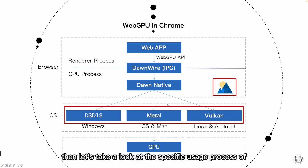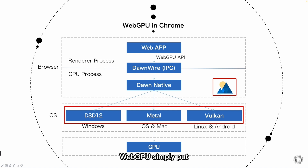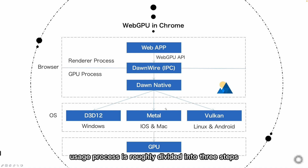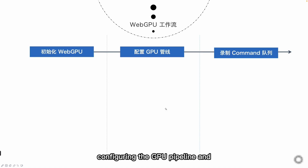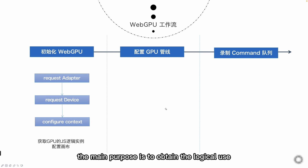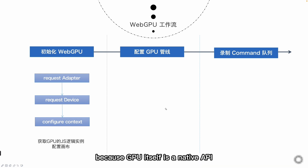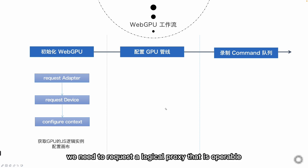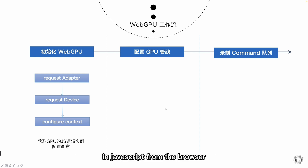Then let's take a look at the specific usage process of WebGPU. Simply put, a complete usage process is roughly divided into three steps: initializing the device instance, configuring the GPU pipeline, and storing commands as we just mentioned. The initialization is easy to understand. In the last video we also demonstrated a simple operation. The main purpose is to obtain a logical GPU that can be operated in JavaScript. Because GPU itself is a native API, we need to request a logical proxy that is operable in JavaScript from the browser. We'll go into more detail in the code later.